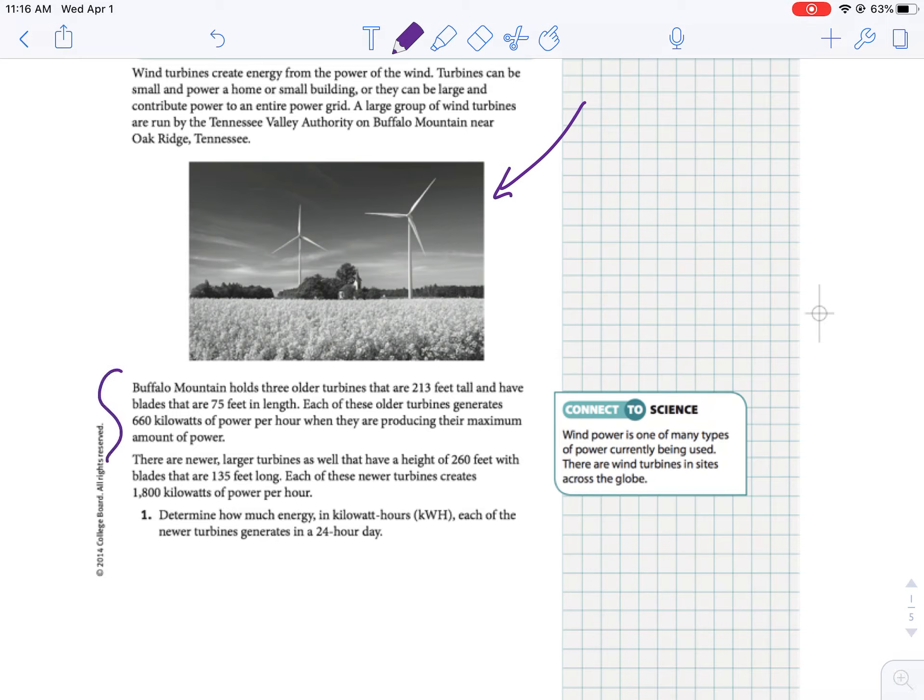So specifically we're going to talk about Buffalo Mountain. They have three old turbines that are 213 feet tall and have blades that are 75 inches in length. Each of these older turbines generate 660 kilowatts of power, so power is measured in kilowatts, and it's per hour. They have some newer turbines that are 260 feet tall with blades that are 135 feet long. They create 1,800 kilowatts of power each hour.